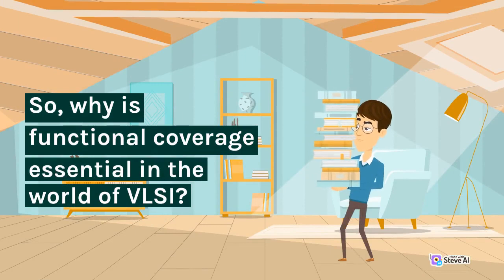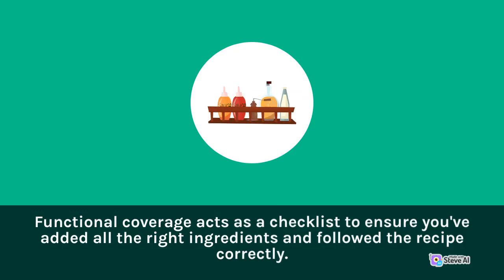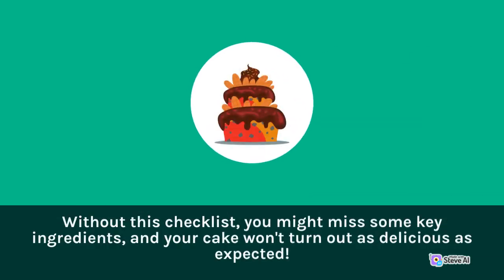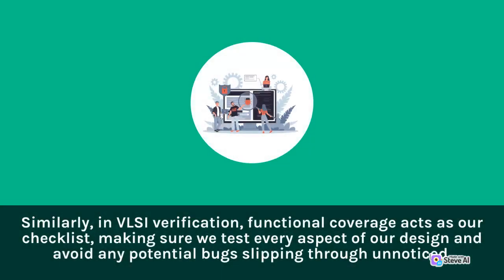So, why is functional coverage essential in the world of VLC? Imagine you're baking a cake — functional coverage acts as a checklist to ensure you've added all the right ingredients and followed the recipe correctly. Without this checklist, you might miss some key ingredients, and your cake won't turn out as delicious as expected. Similarly, in VLC verification, functional coverage acts as our checklist, making sure we test every aspect of our design and avoid any potential bugs slipping through unnoticed.